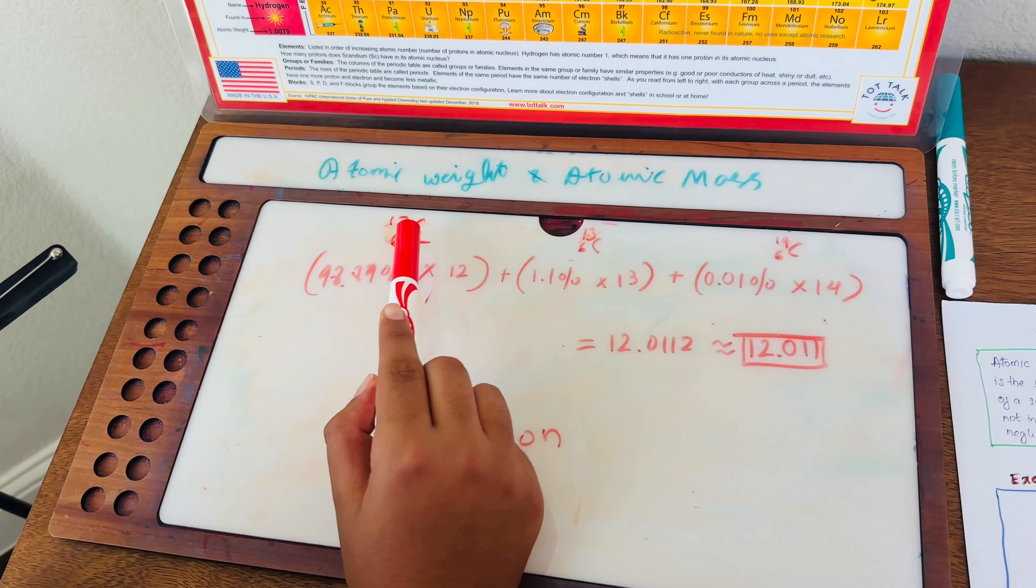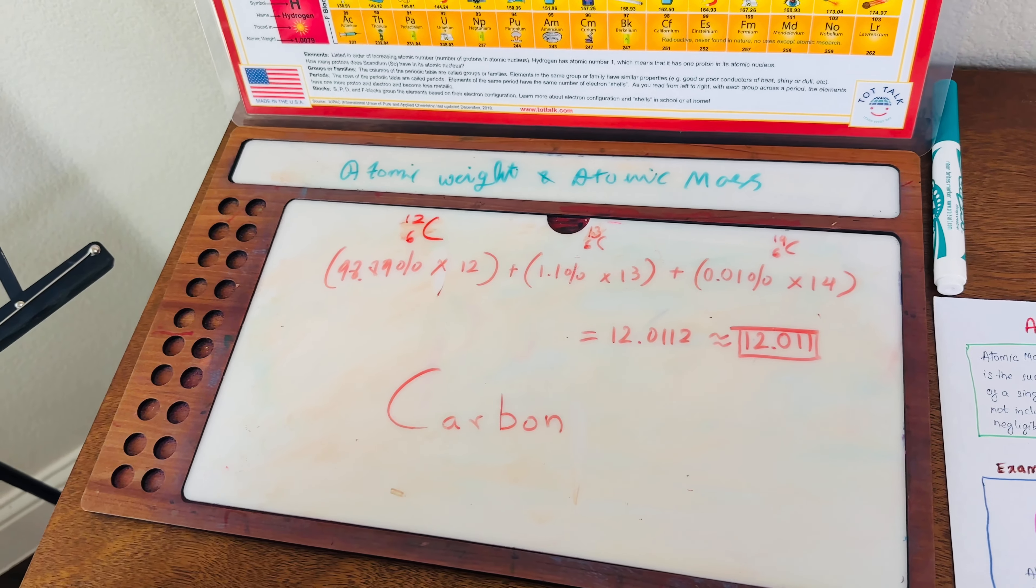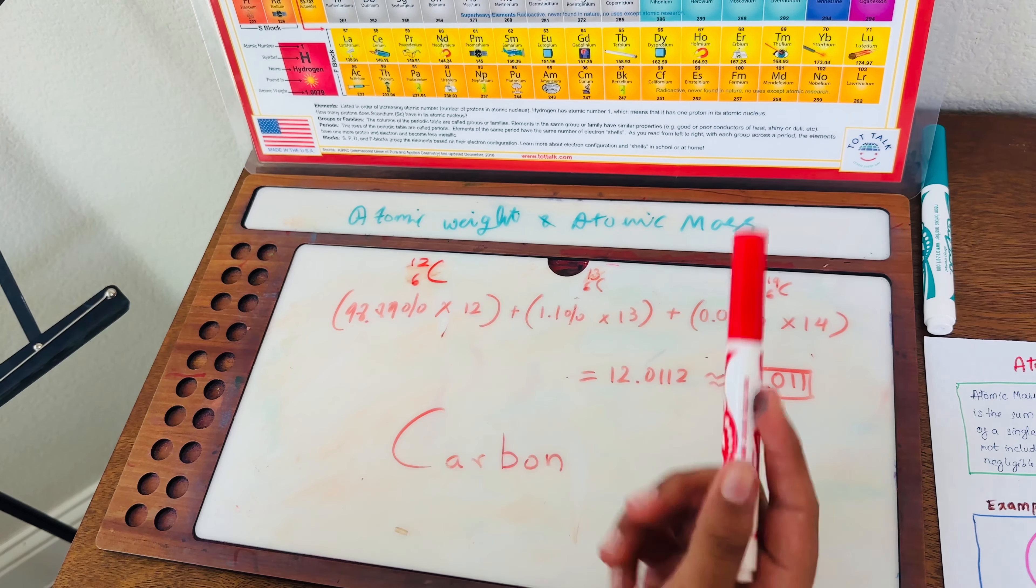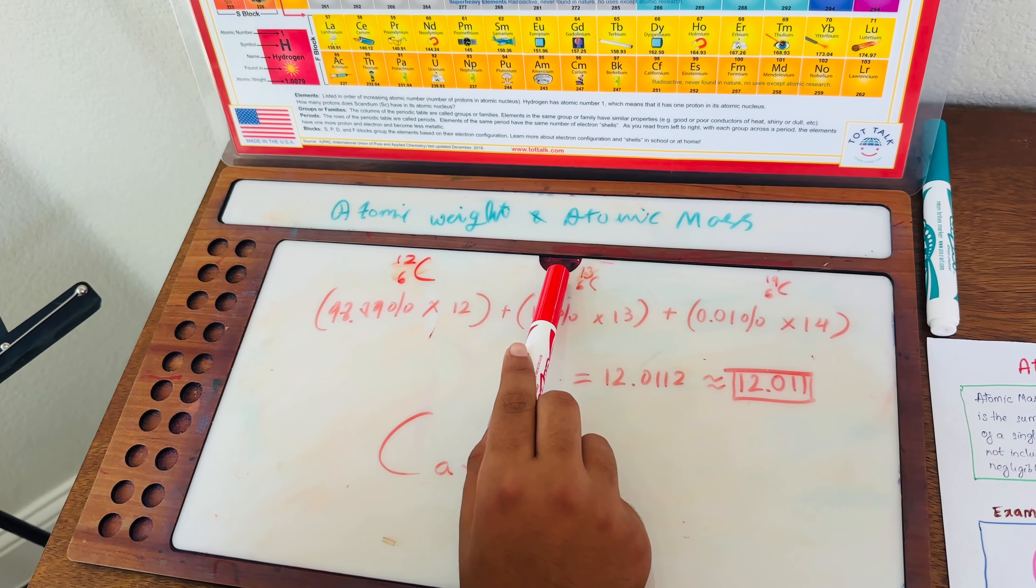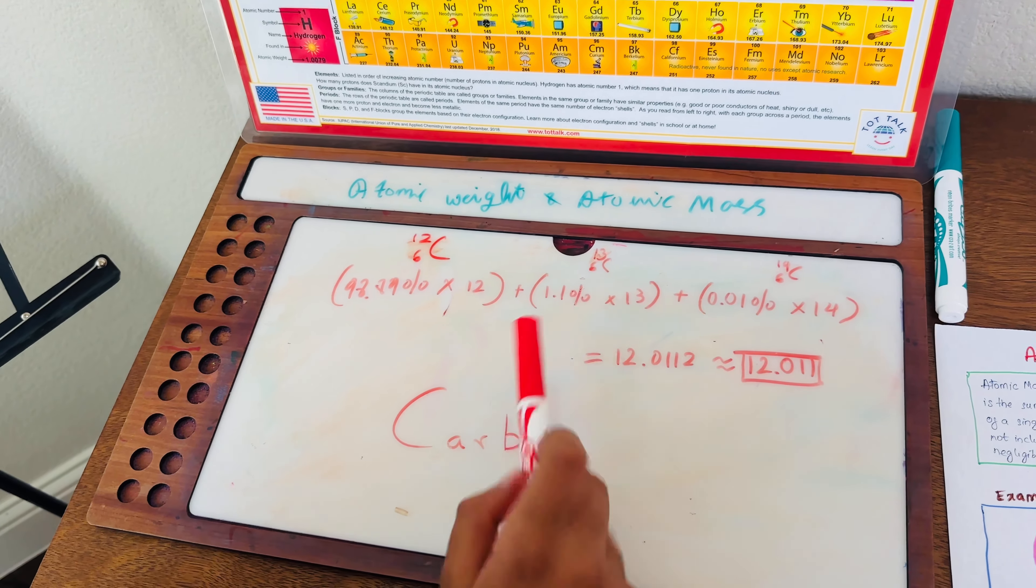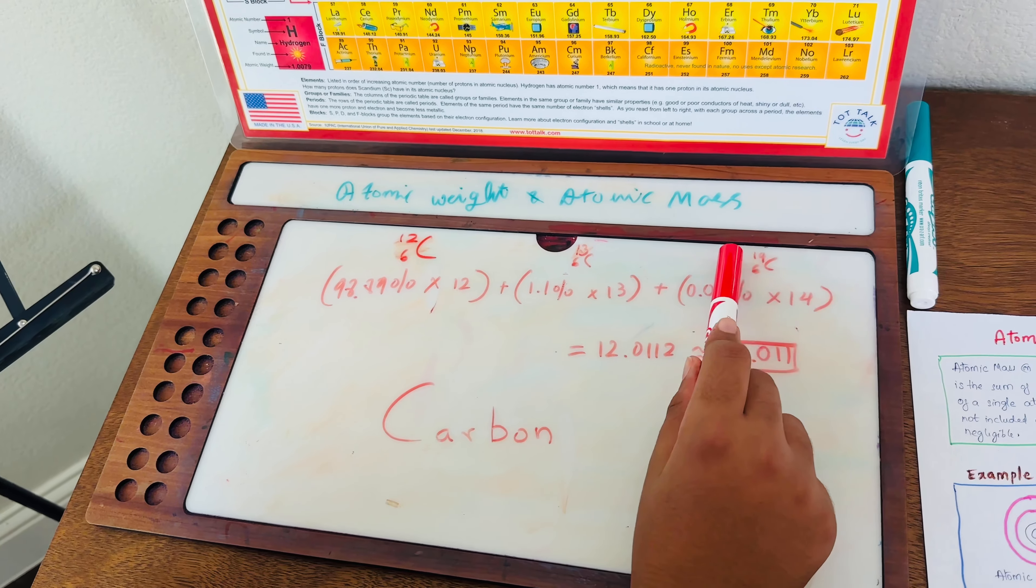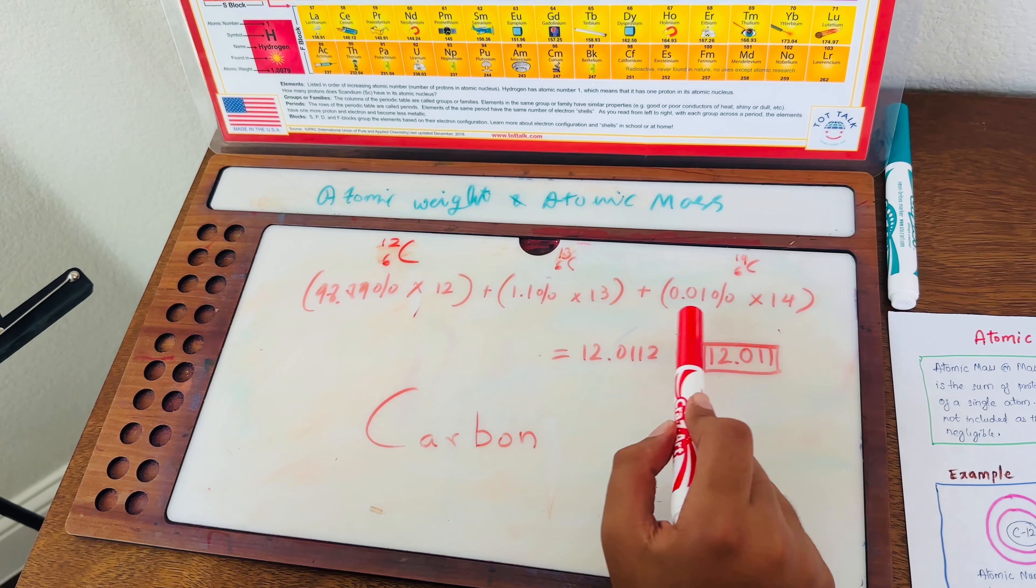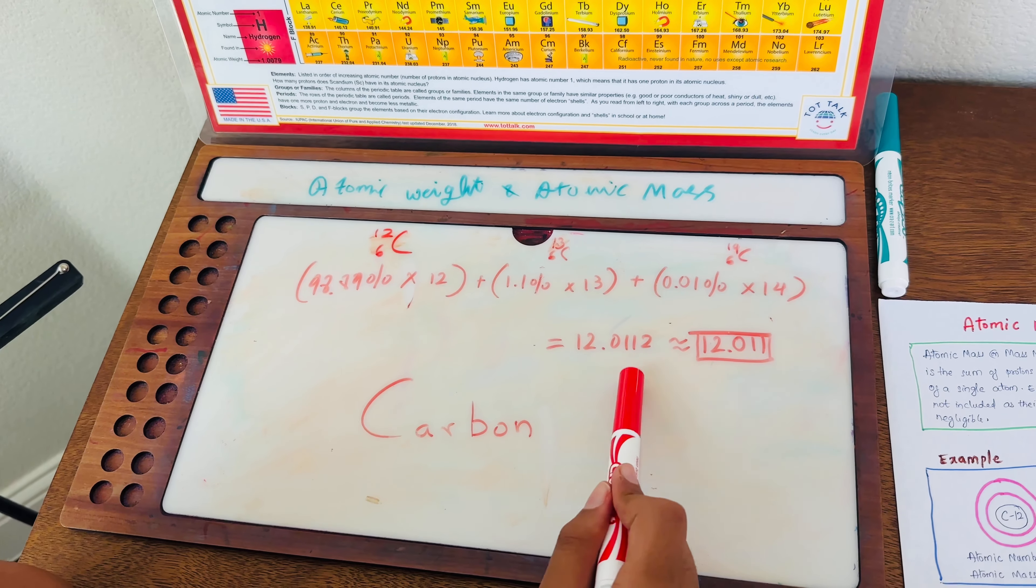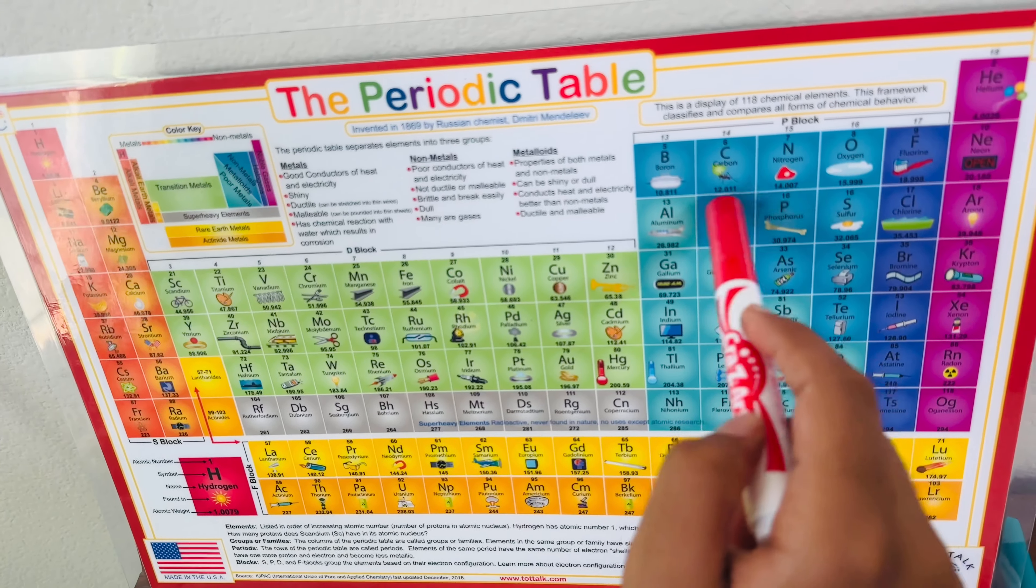Here it has the mass number of 12. We have to multiply in percentage how often it is reoccurring in nature, and also multiply it by its mass. Then we have to add it to another isotope. Carbon with the mass of 13, or 7 neutrons, you only find 1.1% of that in nature. And you have to multiply that by the mass number. For carbon with the mass of 14, you only find it 0.01% of the times, and you multiply that by 14. You get the answer 12.0112, or rounded to 12.011. And if you look over here, we have 12.011, hence getting the atomic weight.